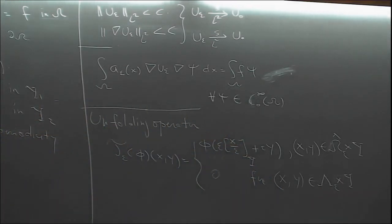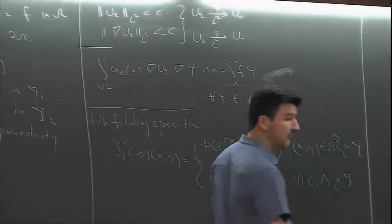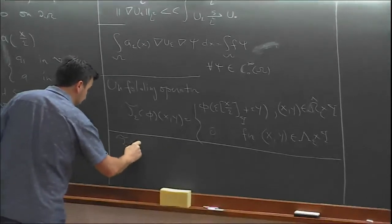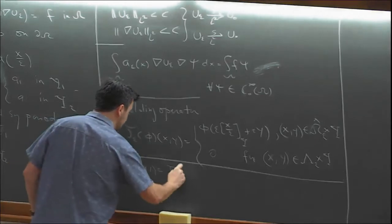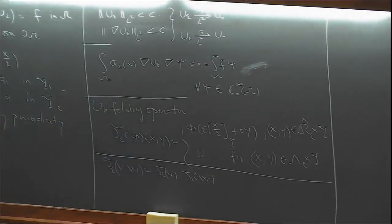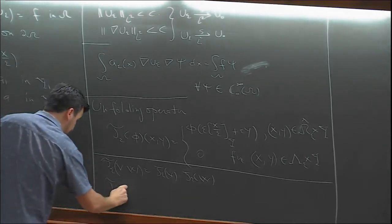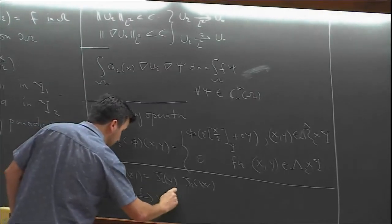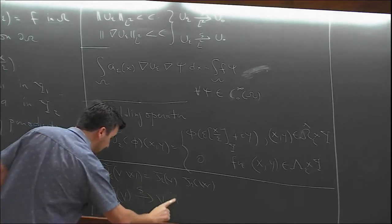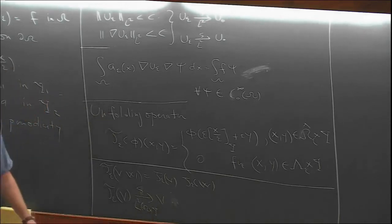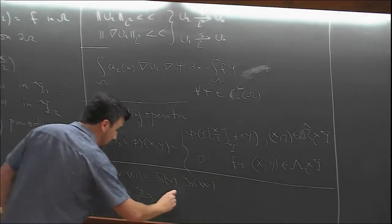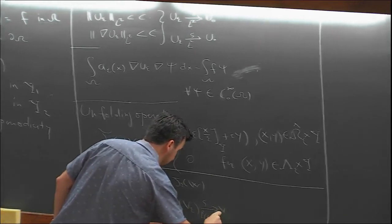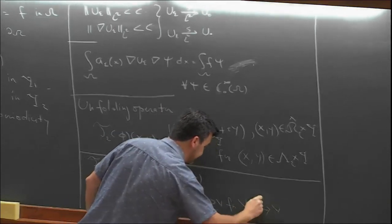Once we defined the unfolding operator, we proved some properties: elementary properties including multiplicativity. We also proved convergence properties — for every L² function, the unfolding of v converges strongly in L²(Ω × Y). The same happens when T_ε applies to strongly convergent sequences in L².